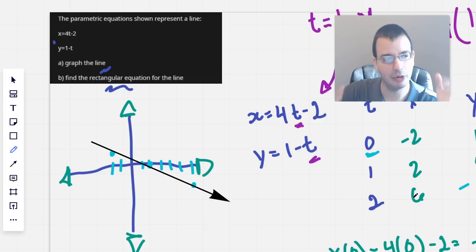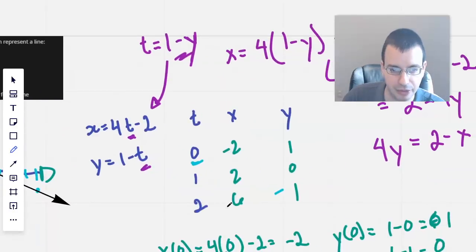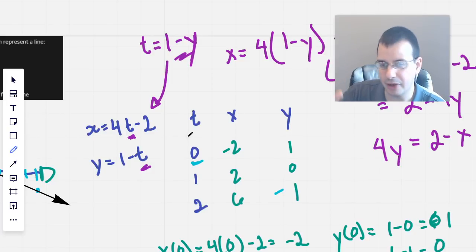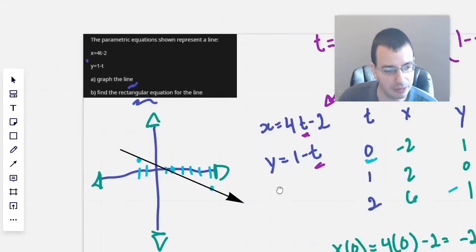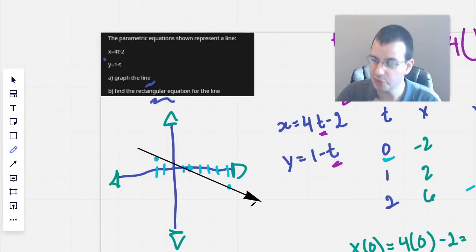To backtrack and recap what we did here: to graph the line, we just plugged in variables. We had t, which we're going to plug in whatever numbers we feel appropriate, usually a little bit negative, a little bit positive, whatever you need to get the idea. Since this is a line, we actually really only needed 2 points, but 3 is good. We then plug in the values we chose for t to get some values for x and y. We then plot these values of x and y, and then we just connect the dots.